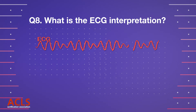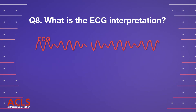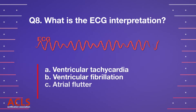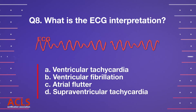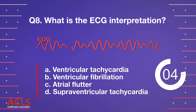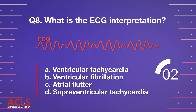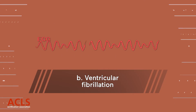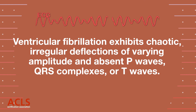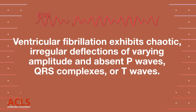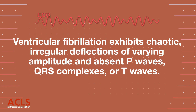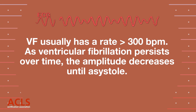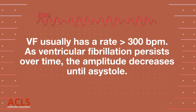Question 8: What is the ECG interpretation? A. Ventricular tachycardia. B. Ventricular fibrillation. C. Atrial flutter. D. Supraventricular tachycardia. Correct answer: B. Ventricular fibrillation. Ventricular fibrillation exhibits chaotic, irregular deflections of varying amplitude and absent P waves, QRS complexes, or T waves. As ventricular fibrillation persists over time, the amplitude decreases until asystole.